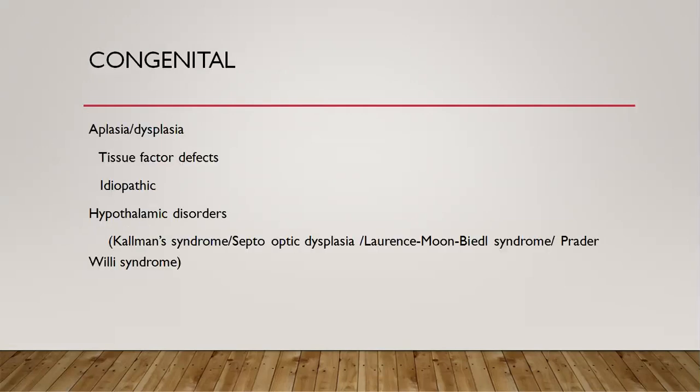Congenital causes include pituitary aplasia or dysplasia, which can be due to deficient transcription factors or can be idiopathic. It can also be due to hypothalamic problems — if the hypothalamus is defective, secretions will not reach the pituitary. Hypothalamic disorders include Kallmann syndrome, septo-optic dysplasia, Laurence-Moon-Biedl syndrome, and Prader-Willi syndrome.